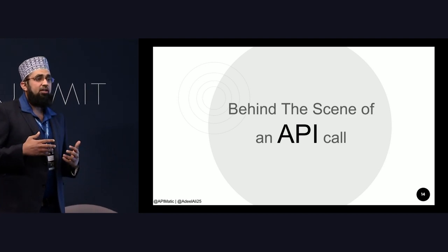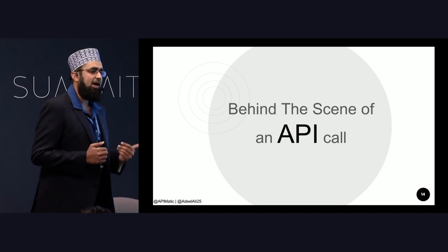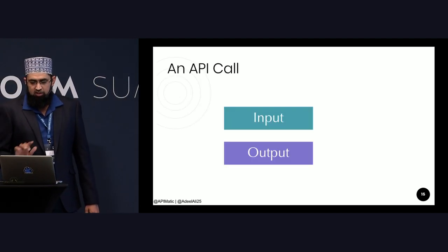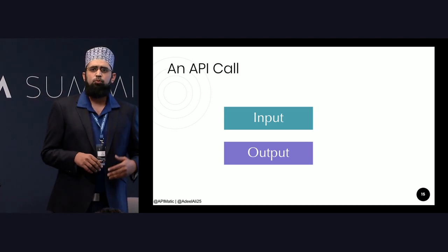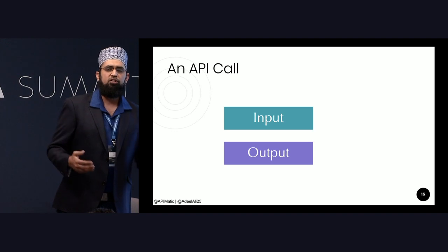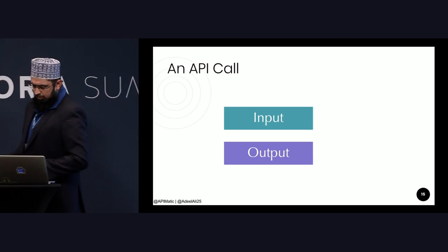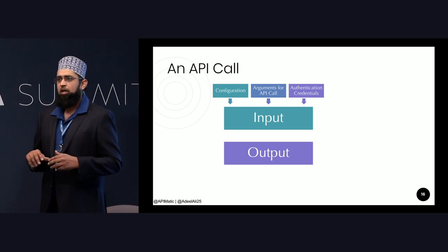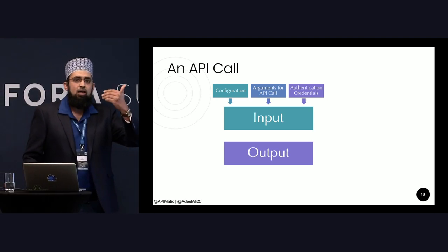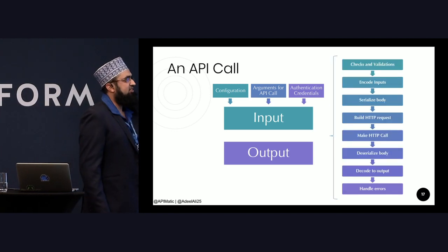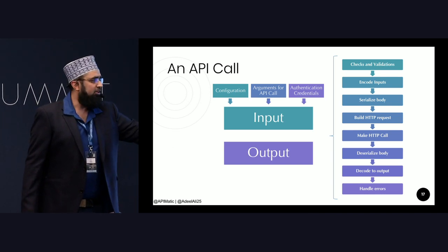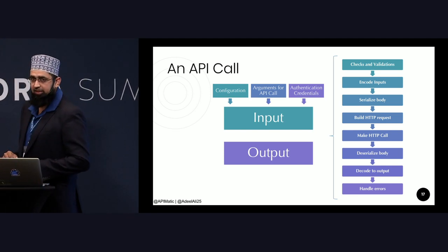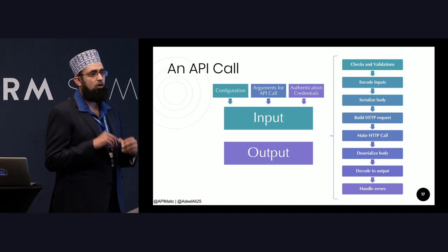To help developers, let me take you behind the scenes of an API call — keep in mind the analogy of machine code versus high-level language. At a very basic level, an API call is simply: you provide an input and get an output. Think of it as a remote function or remote method. The input typically includes configurations, arguments for the API call, and authentication information. A developer then goes through a series of steps: checks and validations, encoding input, serializing, building HTTP requests, making the HTTP call, deserializing the response, decoding, and handling errors — after all that, you receive a response, the output of the intended API call.